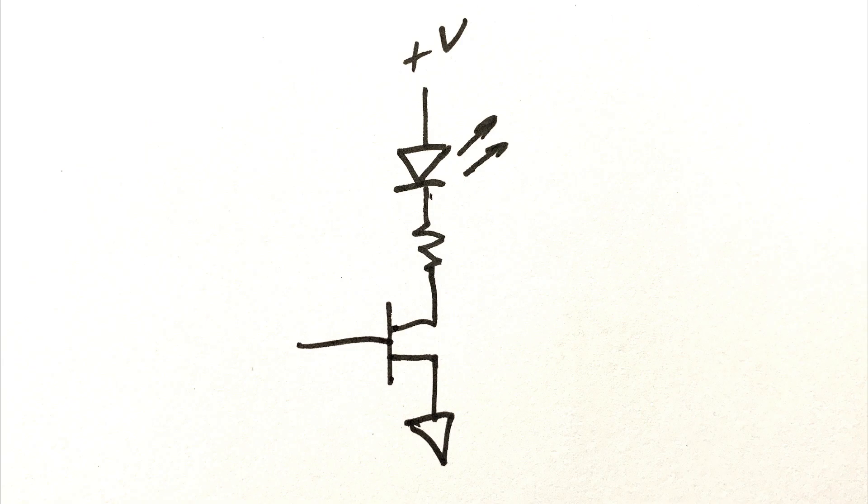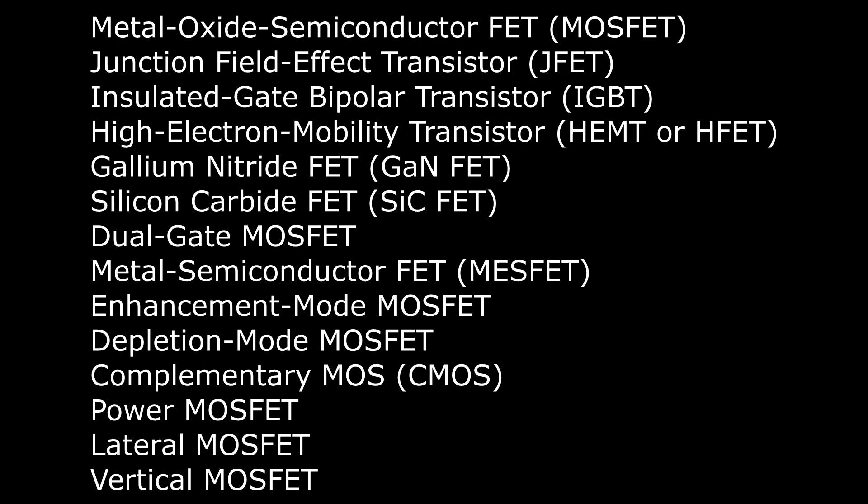So first of all, you need to figure out how many different types of things will I learn how to draw. Here's a not complete list of MOSFETs or FETs, different types of FETs. There's JFETs, MOSFETs, there's different insulated gates, depletion mode, enhanced mode, all different types of FETs. So do you draw them all the same or do you draw them differently?